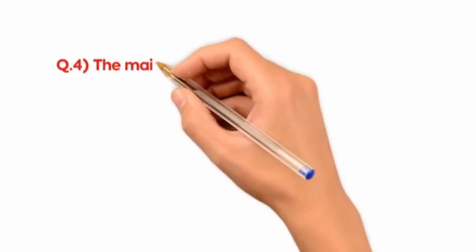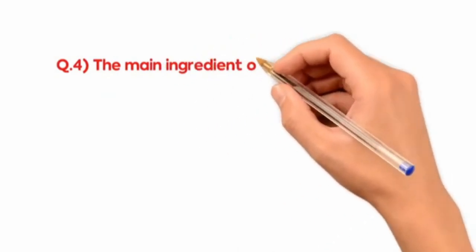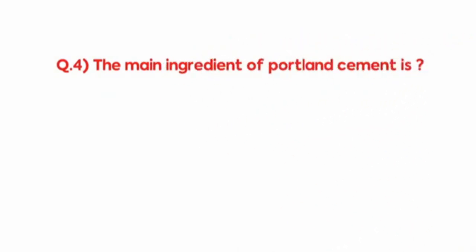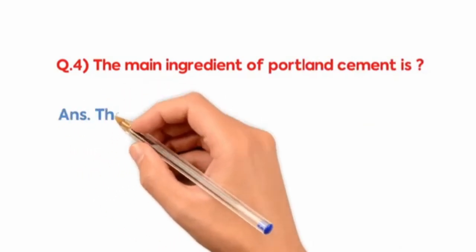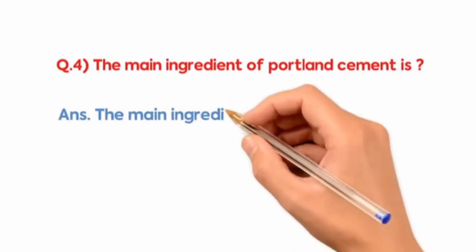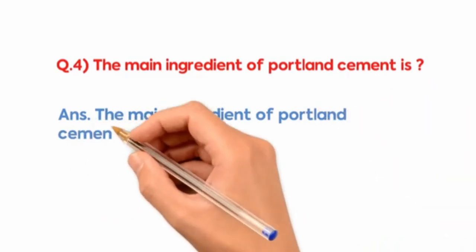The main ingredient of Portland cement is? The main ingredient of Portland cement is lime and silica.